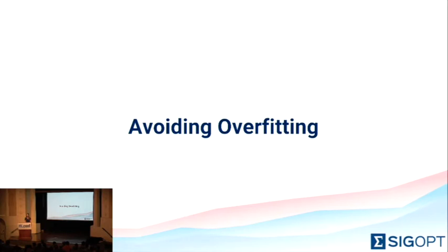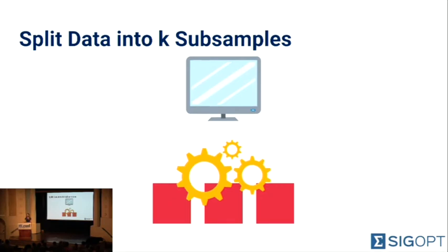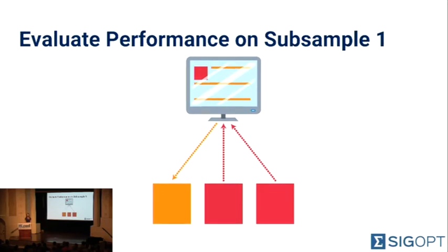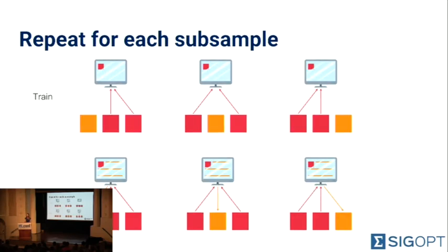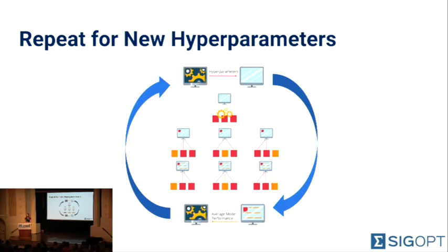What I'm going to share is a way to avoid overfitting and help your model generalize, known as K-fold cross-validation. We receive a set of hyperparameters as normal, but instead of evaluating on one train-test split, we split the data into K subsamples. We reserve subsample one for evaluation, train on subsamples two through K, and evaluate on subsample one. We repeat this for every subsample — reserving it for testing, training on the others, and evaluating. At the end, performance is not just the result on one test set; it's the average performance across all K test sets. This is repeated for every set of hyperparameters, and K-fold cross-validation has been shown to help models avoid overfitting and generalize well to unseen data.